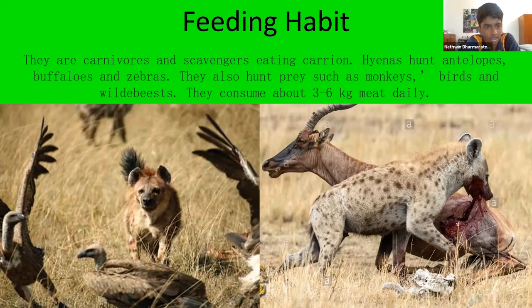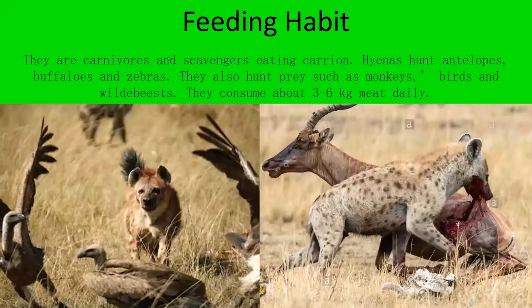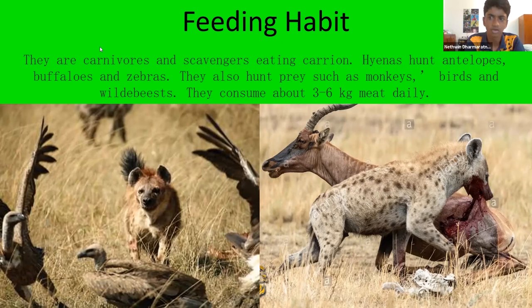Hyenas are carnivores and scavengers, eating carrion. They hunt antelopes, buffaloes, and zebras, and also prey on monkeys, birds, and wildebeest. They consume about three to six kilograms of meat daily. Wildebeest is another type of animal — something like a cross between a bull and a buffalo.